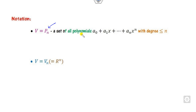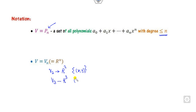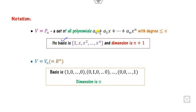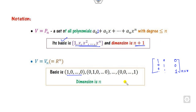We denote P(N) as the set of all polynomials of degree less than or equal to N, and V(N) as an N-dimensional vector space. For instance, V2 is R², the XY plane, and V3 is R³, the XYZ space. For P(N), the standard basis is {1, x, x², ..., x^N}, which has N+1 elements. For the space of N×N matrices, the basis consists of the identity matrix and its variants, giving dimension N.